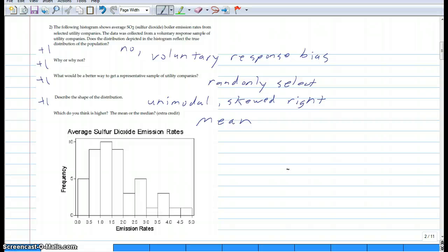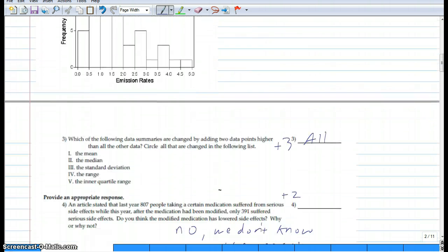It would be unimodal - there's definitely one mound here - and it's definitely skewed right. I think if you had one or either of those I gave you credit. Then I made this one extra credit: which one you think is higher, mean or median? If it's skewed right that will disproportionately pull it to the right, so the mean will be pulled but the median will not really move. The mean is not resistant to outliers.